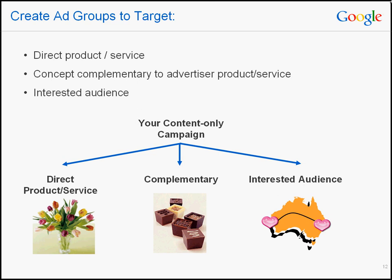There are a few different ways to target on the content network. The first strategy is creating an ad group that is directly targeted to your product or service — for example, a flower retailer targeting flower-related content sites. On the content network, we can also target ads to sites about products that are complementary to our specific product or service. In this example, the flower retailer is targeting chocolate-related sites, because chocolates are complements of flowers.